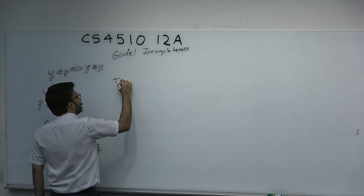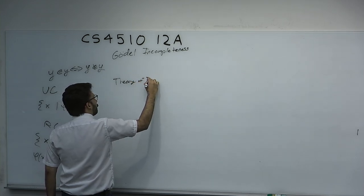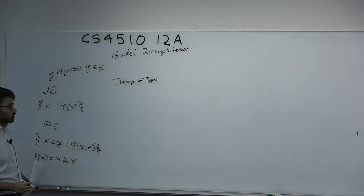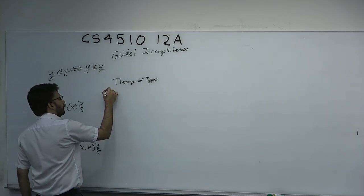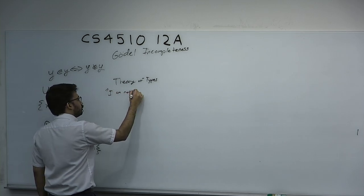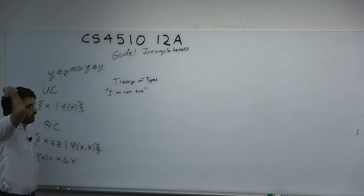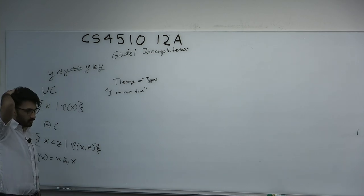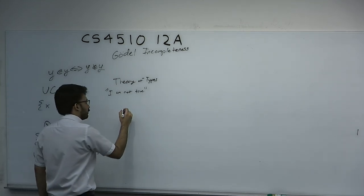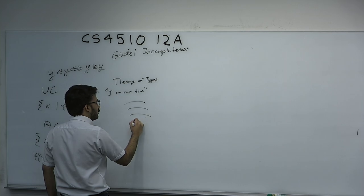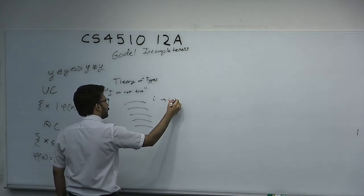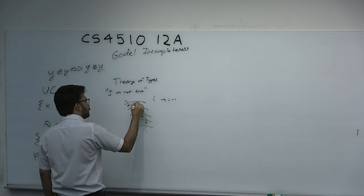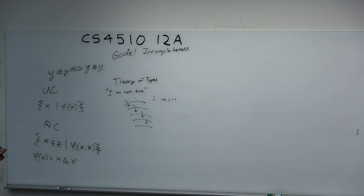The other approach is a theory of types. The whole problem with Russell's paradox is it appears to be self-referential. Russell was able to encode the sentence semantically equivalent to 'I am not true' using the formal language of Frege's system. The sentence is able to say something about its own truth value, which should not be allowed. So he comes up with the theory of types, where each level I can only speak about objects at level I minus one and less.